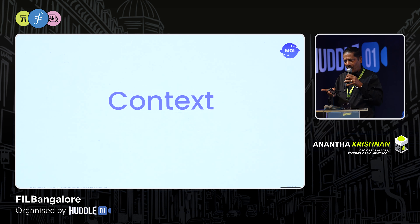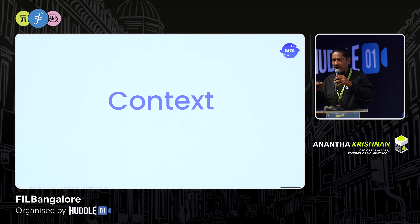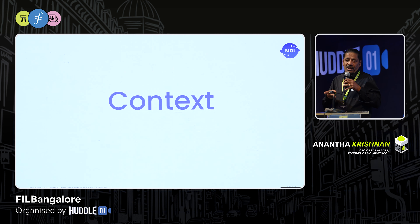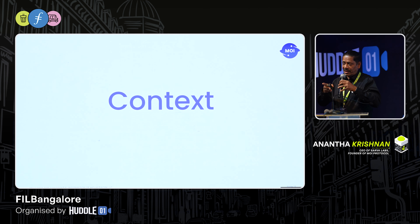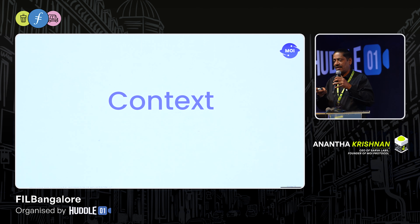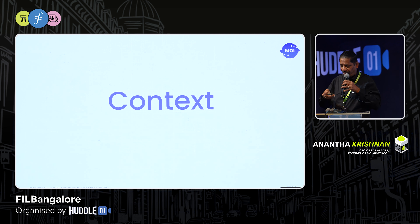Once you have participants, how do you define them? Participants are defined through something called context. Context is a representation of the participant. Today's computers have an idea called identity — identity is like your name. Your mother calls you by one name, your father by another. But context is like you. Once you bring context — your understanding of the computer — into computation, you are able to enable it in a very intelligent fashion.